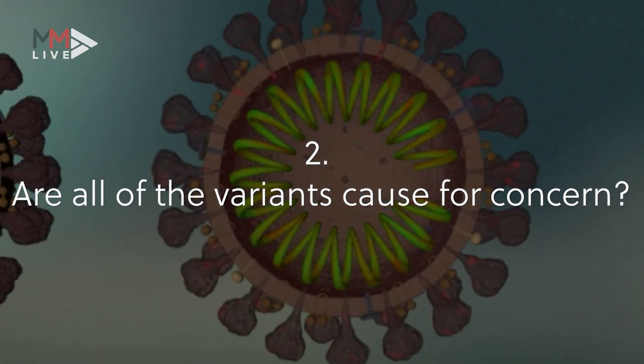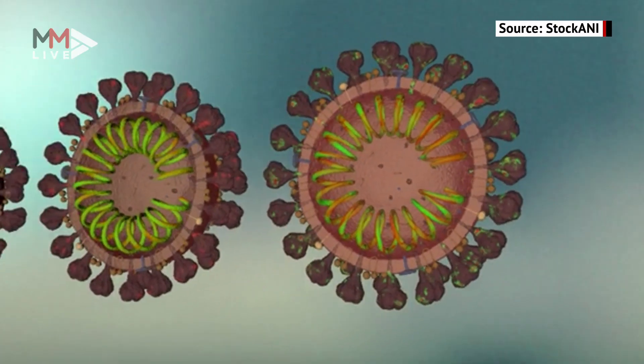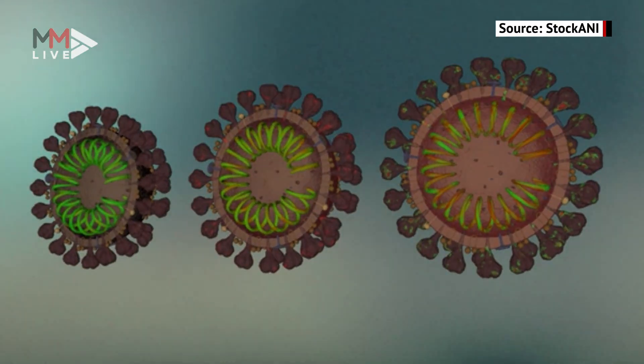When we are concerned about it is when the mutations occur in the spike protein — in that part of the virus that is attaching to the human cell — because then it could change the way in which the virus behaves.